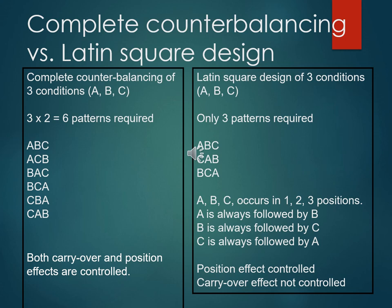Here's the contrast between full counterbalancing and Latin square design with three conditions. Full counterbalancing requires 3×2 = 6 different patterns; with four conditions, you'd need 4×3×2 = 24 patterns. In the Latin square design with three conditions, you only need three orders: ABC, CAB, and BCA. Each condition appears once in each position, so position effect is controlled — but carry-over is not fully controlled. To control both, you need full counterbalancing.